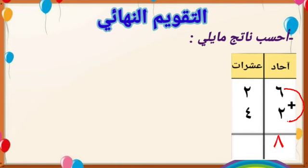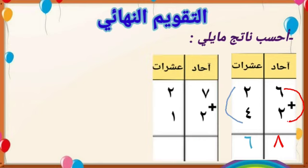ننتقل إلى العشرات: نجمع الاثنان مع الأربعة يصبح ستة. أي ثمانية وستون. التدريب الثاني: سبعة وعشرون زائد اثنا عشر. نبدأ بالآحاد: سبعة زائد اثنان يساوي تسعة.